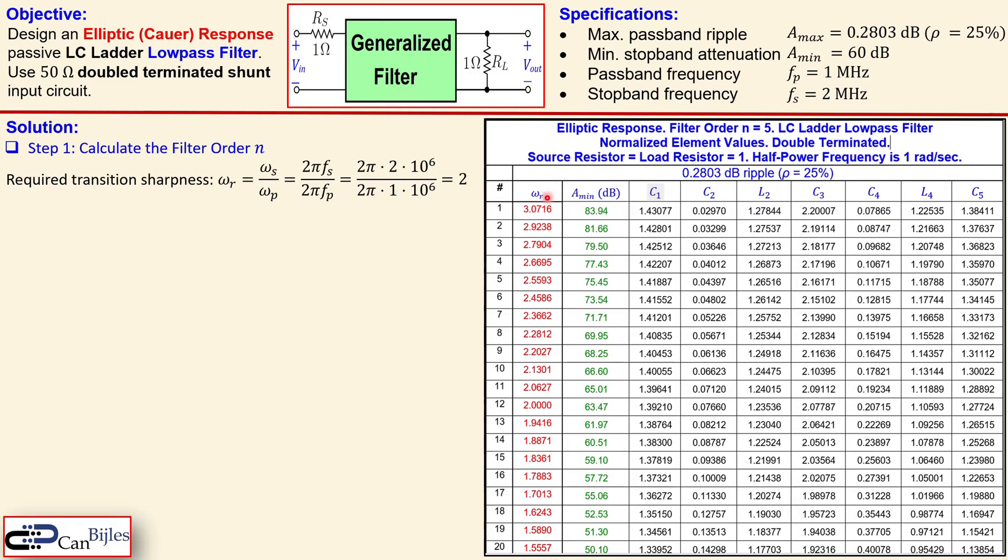You can see here that they're actually defined for the low pass filter and they're all normalized values here. Now what you see is this column here is going down from 3.0716 as the transition sharpness all the way down and it will then reduce. You can also see the A_min for each part and then the normalized values for the components from C1, C2, L2, etc. and this is now for this ripple we have also here.